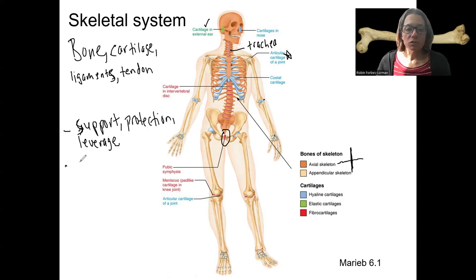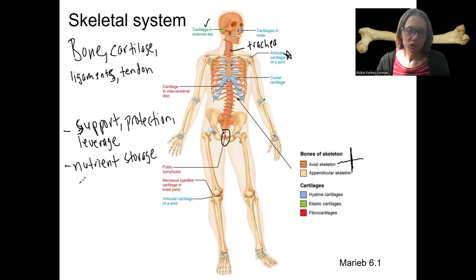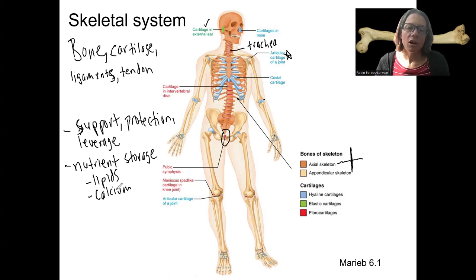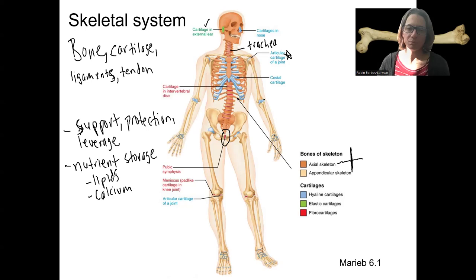Maybe more subtle functions, but also really important, is nutrient storage. This includes, but isn't limited to, the two primary ones: lipids — so in the yellow bone marrow — and fats, and calcium in the bone tissue itself. There are other minerals in the bone tissue as well besides calcium, but calcium is a big one. We'll talk about the regulation of calcium from storage in the bones to being in the blood plasma.